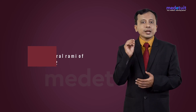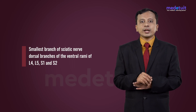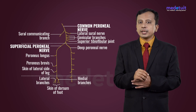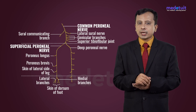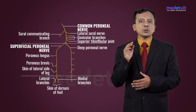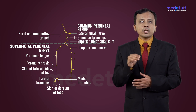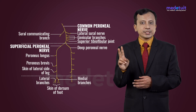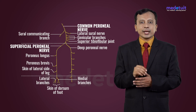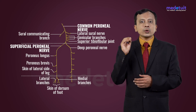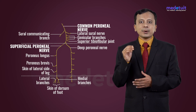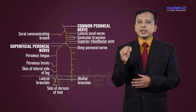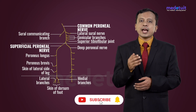The common peroneal nerve is the smallest branch of the sciatic nerve. It arises from dorsal branches of the ventral rami of L4, L5, S1, and S2. This nerve starts from the upper part of the popliteal fossa and goes towards the lateral angle of the popliteal fossa. It terminates at the level of the neck of the fibula into the superficial peroneal nerve and the deep peroneal nerve, and it lies over the sheet of the popliteus fascia. At the popliteal fossa, it gives rise to two branches: cutaneous branches — the sural communicating nerve and the lateral sural nerve — and articular branches, which include the superior and inferior lateral genicular branch and the recurrent genicular branch.